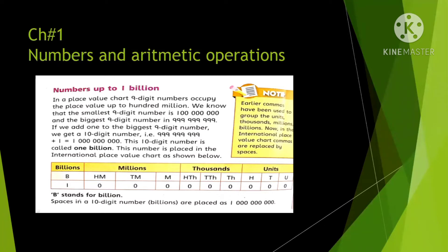In the previous class we studied about nine-digit numbers that were up to 100 million. Today I will introduce you with billion. The nine-digit number is one hundred million, and the greatest nine-digit number is 999 million, nine hundred ninety-nine thousand, nine hundred ninety-nine. When we add one digit to it, we get a 10-digit number — that is one billion, placed in the international place value chart, denoted by B.